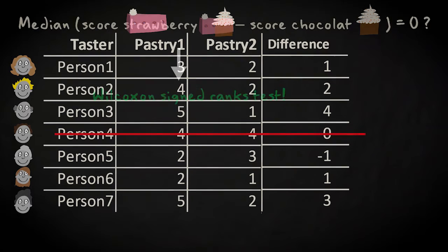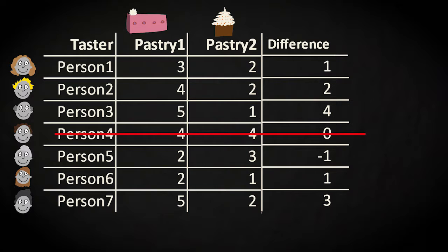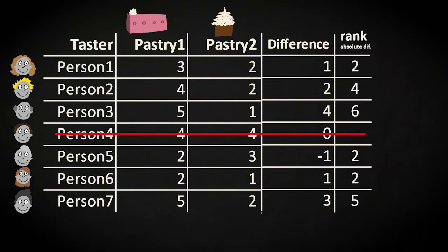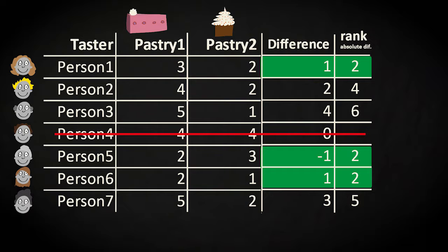And it works by first taking the difference between each matched pair of observations. Next, you should rank the absolute value of these differences. If there are ties, you assign the average of the tied ranks.